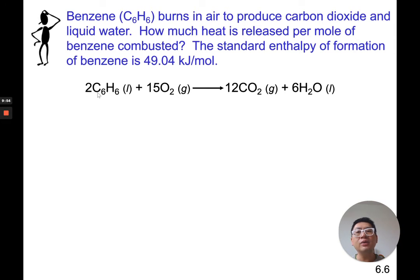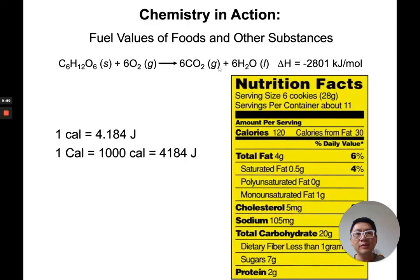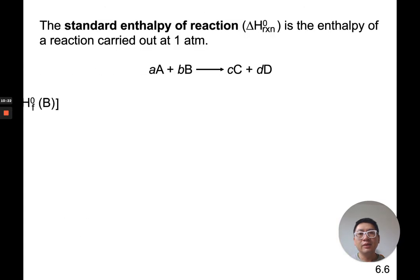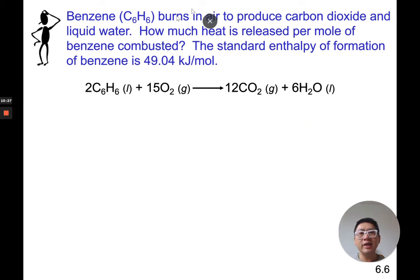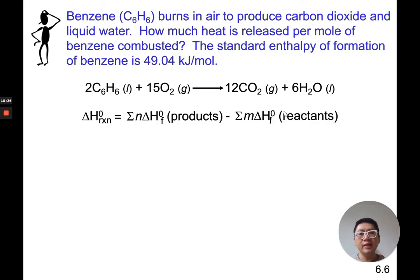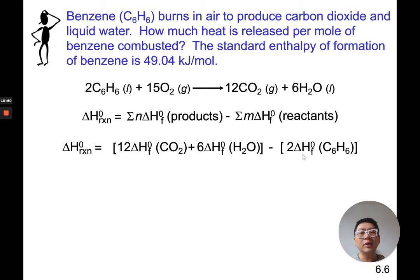Delta H of a reaction is equal to the heat of formation of all the products — carbon dioxide and water — minus the heat of formation of all the reactants — benzene and oxygen. It will be the heat of formation of carbon dioxide and water minus the heat of formation of benzene and oxygen. I need to look up carbon dioxide and water from the table. Benzene was given as 49.04. For oxygen — it's an element, so heat of formation is zero; no need to look it up.